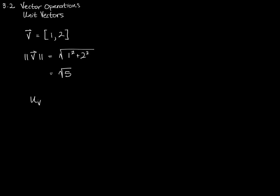The unit vector for vector v is the same vector [1, 2] scaled back so that its length, instead of being the square root of 5, is 1. I need to divide the components of that vector by the square root of 5. I can write it as 1 over root 5 times the vector, or distribute the scalar across the components. You'll see it both ways.